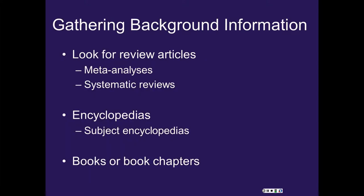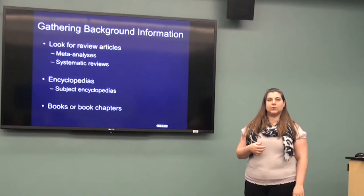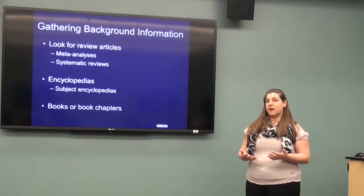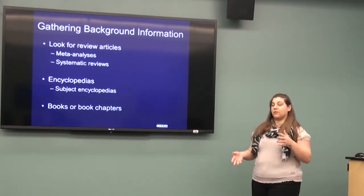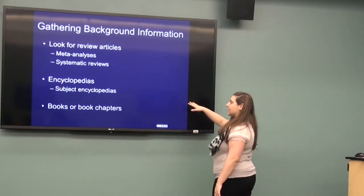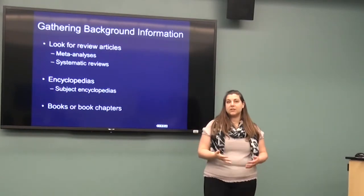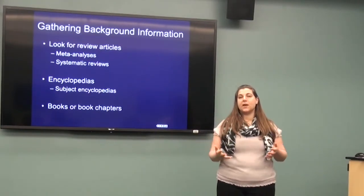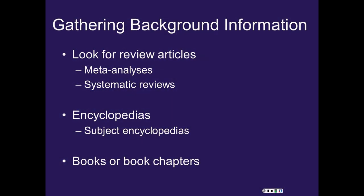There are a few places that you can look for background information. The first one is review articles, and those are excellent places to find out more information about your topic as well as getting a list of references you can use for your paper. You also want to look at encyclopedias — both Lapis and Joiner Library have subject encyclopedias, so more than likely we have something in your area. Books and book chapters are excellent sources for getting background information. When you gather background information, you'll have a better understanding of your topic as well as some keywords you can use in the databases.